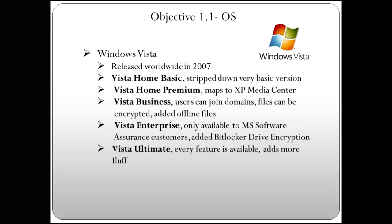The replacement for XP was Windows Vista. After a much-delayed release, it came out in 2007 and came in different versions. Home Basic is their stripped-down, very basic version. Home Premium added more capability — we were starting to integrate more entertainment into our PCs, and that's what Home Premium was for.